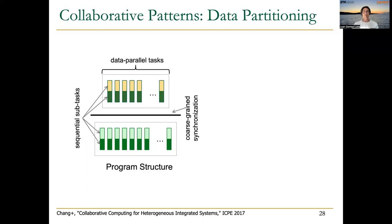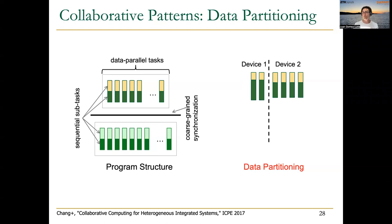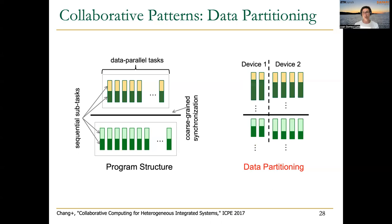With a system where CPUs and GPUs can collaborate in a fine-grained manner, we can implement different partitioning schemes to distribute tasks over different devices. For example, device one could be a CPU and device two a GPU. Some devices are better for certain subtasks: subtasks might be shorter to execute on one device, while the other device may offer more parallelism. At some point synchronization is needed, and then the second kernel is computed, partitioning the data-parallel tasks over both CPU and GPU.